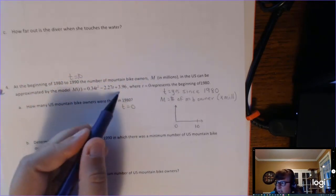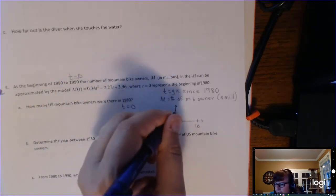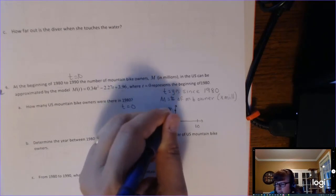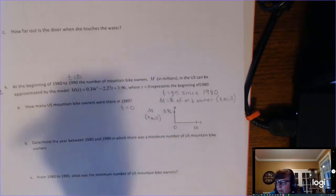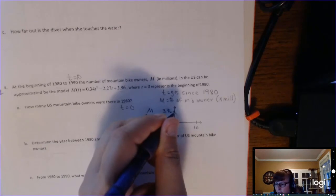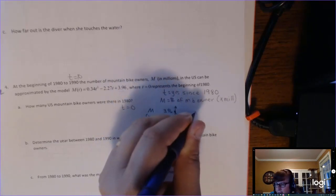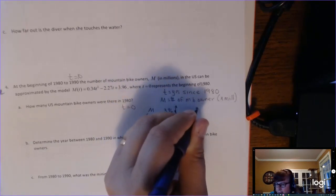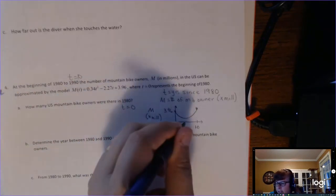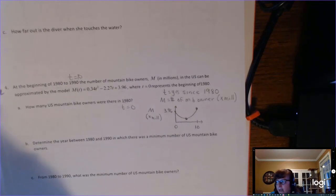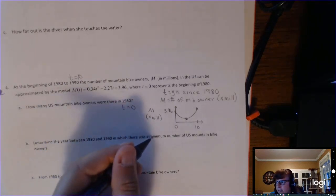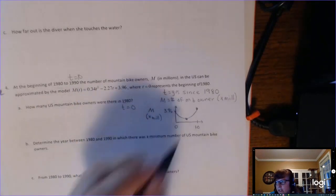I know the y-intercept is the constant 3.96, but this is M in millions. So when it's time to interpret, that 3.96 really means 3.96 million, and I know it opens up. So this is what my function looks like. And so when I ask for the vertex, I'm going to be looking for a minimum or vice versa. If I ask you for the minimum number of mountain bikers, you need to understand you're looking for the vertex.